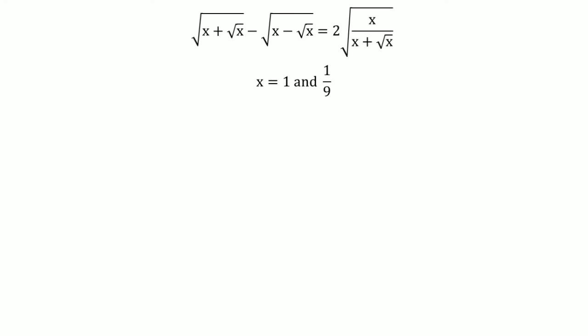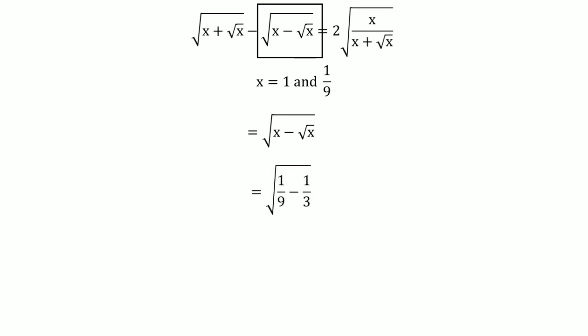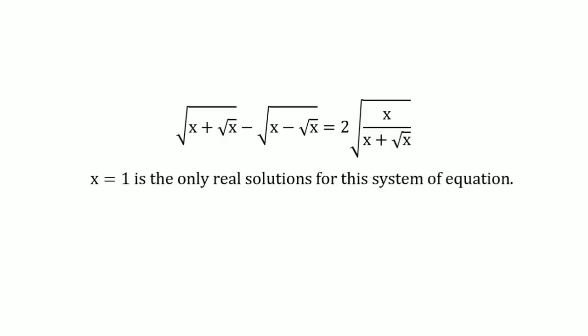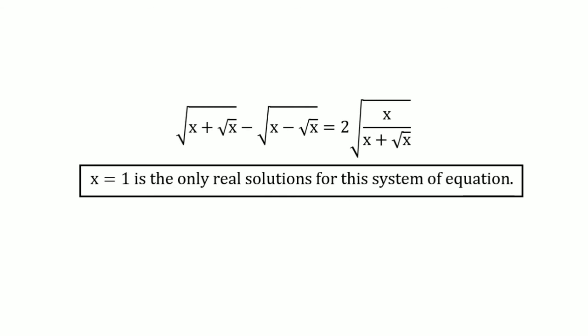To determine which value is valid, we substitute x = 1/9 back into the original system. Taking the common LCM, we get √(−2/9), which is a complex number equal to 2i/3 — and simplifying further is not possible in the reals. So x = 1/9 is completely invalid, making the whole system of equations inconsistent for that value. Therefore, x = 1 is the only real solution, and that is our correct answer. I hope you enjoyed this quick algebra problem.